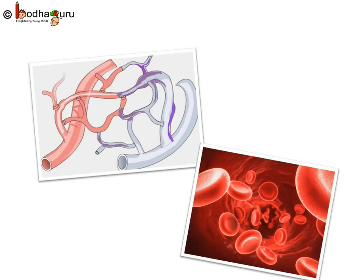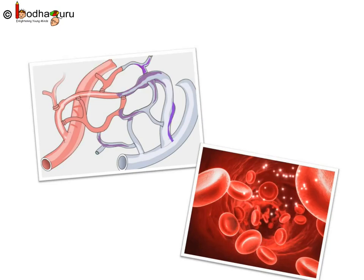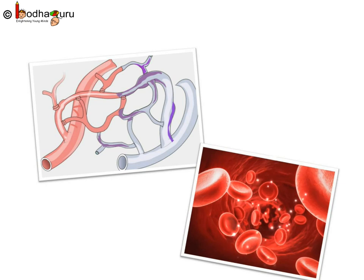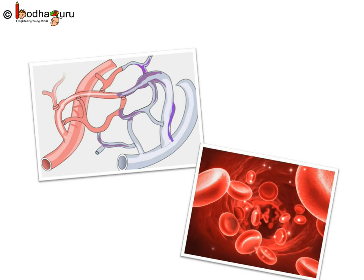Good morning everyone. We all know that in our body, the blood never leaves the blood vessels. Then, how do the nutrients etc. get passed to the cells, and how do excretory products reach blood from the cells? This means something must be there in between blood and the tissues.